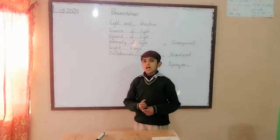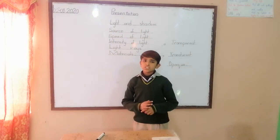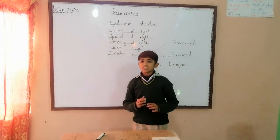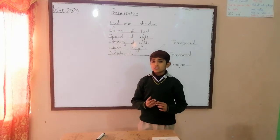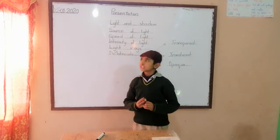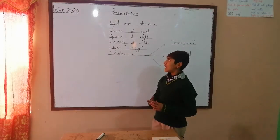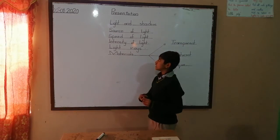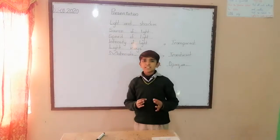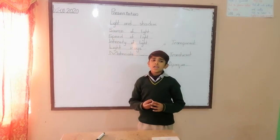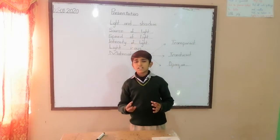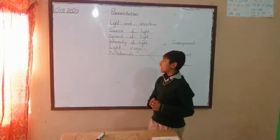Now I will tell you about speed of light. Light is the world's fastest thing. Light from the sun reaches the earth in 8 minutes. Now I will tell you about intensity of light. Intensity of light means brightness of light.